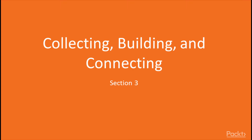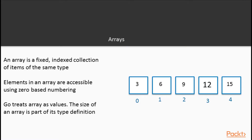In this video, we're going to learn about arrays in Go. An array is a fixed indexed collection of items of the same type. The elements in an array are accessible using zero-based numbering. In this illustration, the first element of the array is at index 0, and the value at index 0 is 3. The last element in the array is at index 4, and the value at index 4 is 15.